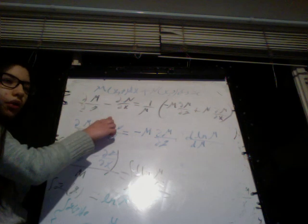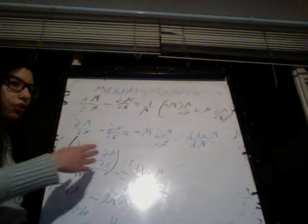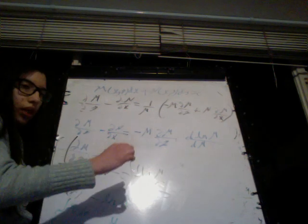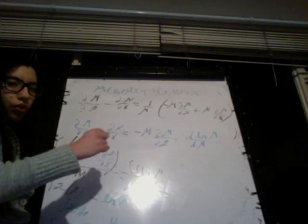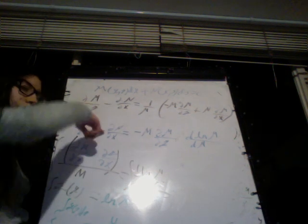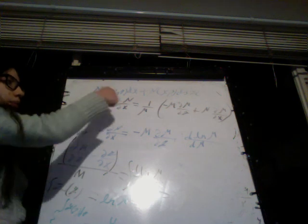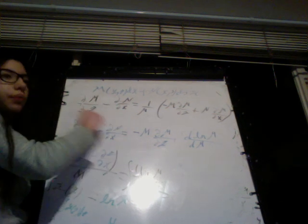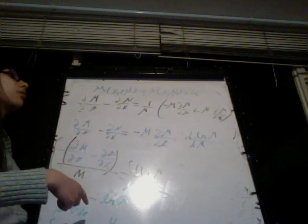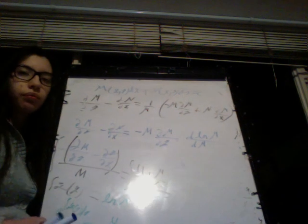If instead the expression does not depend only on x but only on y — if you subtract and divide by negative M and it just depends on y, meaning you only have y's or constants but no x's — then the integrating factor depends only on y. You integrate that, take e to that, and multiply the equation by it. If in both cases you have x's and y's, you cannot find an integrating factor that depends only on one variable, and you should look for another way to solve the differential equation.